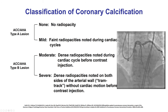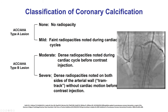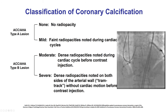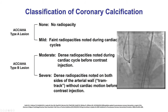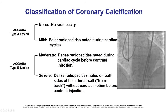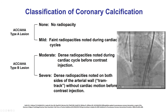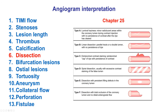The definition of severe calcification by angiography is dense radio-opacities on both sides of the arterial wall. Importantly, coronary angiography is actually fairly insensitive for detecting calcification — intravascular imaging is much more sensitive.